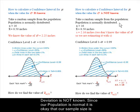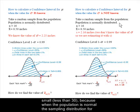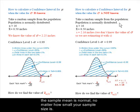Since our population is normal, it is okay that our sample size is small, less than 30, because when the population is normal, the sampling distribution for the sample mean is normal, no matter how small your sample size is.